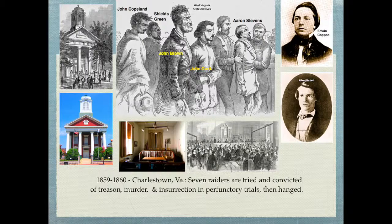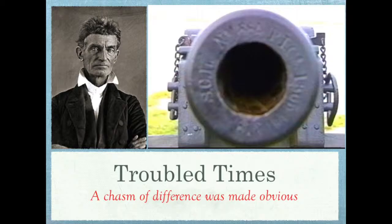Alex Butler took a seat for the first time in the United States Congress the same month John Brown and four of his raiders were hanged in Charlestown, Virginia, after they tried to capture the federal arsenal at Harpers Ferry, hoping to inspire a wholesale rebellion by those enslaved. They did succeed in igniting the enslavement issue with John Brown's blow against slavery and the hangings of Brown's raiders in Charlestown following convictions in a state court.